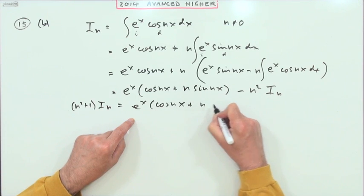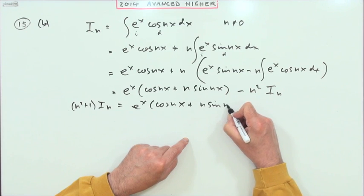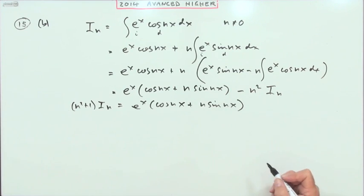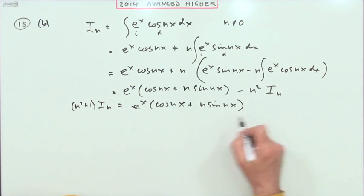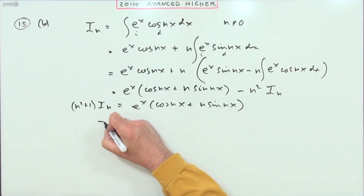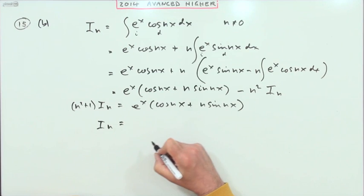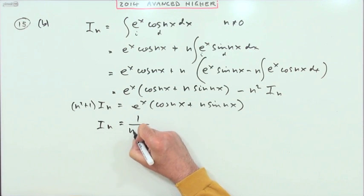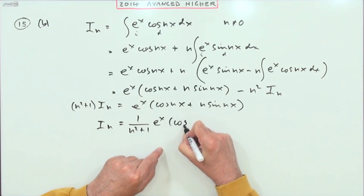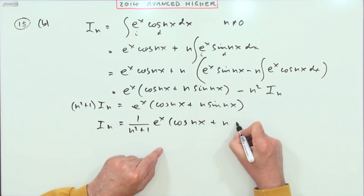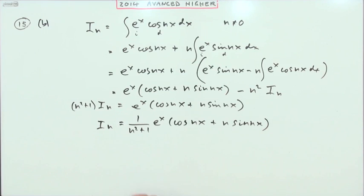I know I should be popping the integral in—I'm sorry, popping in the constant. I'll put it in at the end. So I_n equals 1/(n² + 1) times e^x (cos(nx) + n sin(nx)). Almost forgot again, plus C.